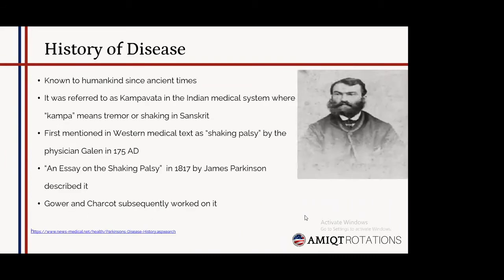The disease has been known to humankind since ancient times. It was referred to as 'Kampavata' in the Indian medical system, where 'Kampa' means tremor or shaking in Sanskrit. It was first mentioned in Western medical texts as 'shaking palsy' by the physician Galen in 175 AD. It was properly described by Dr. James Parkinson in 1817 through his famous essay 'An Essay on the Shaking Palsy.' Later, Gower and Charcot helped define the many clinical symptoms of Parkinson's disease.